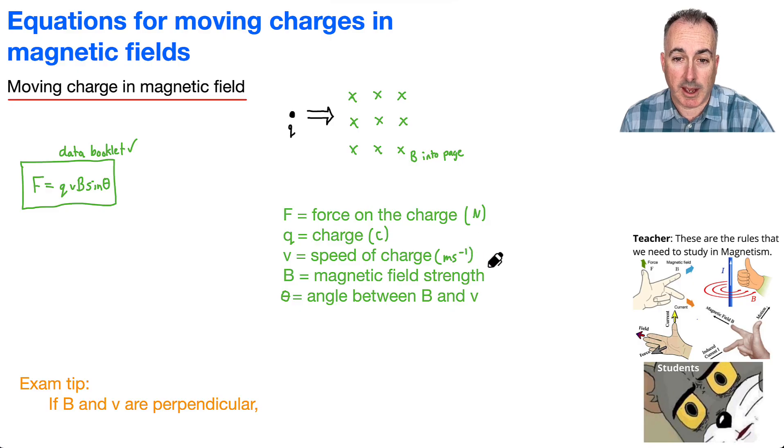Magnetic field strength, remember, is in Tesla. And then the angle between B and V, that's going to be an angle in degrees.